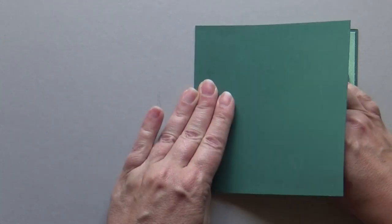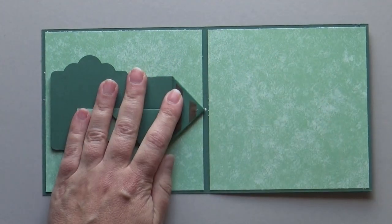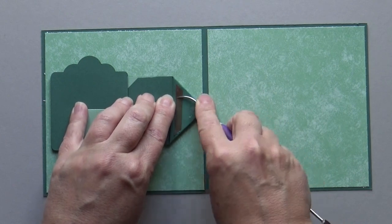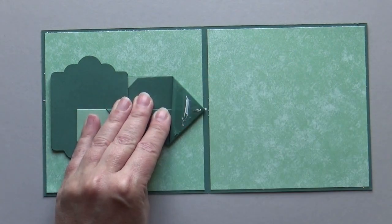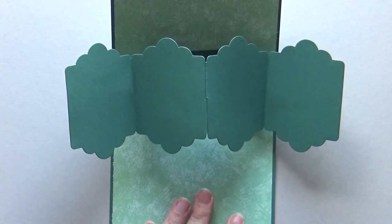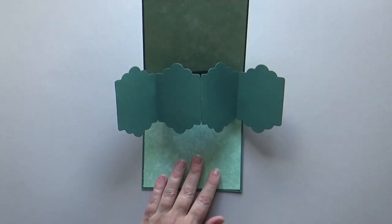Fold the card. Open the card and remove the protective layer of the other side. Add some glue and fold your card again. Your twist and pop card is ready for decoration.